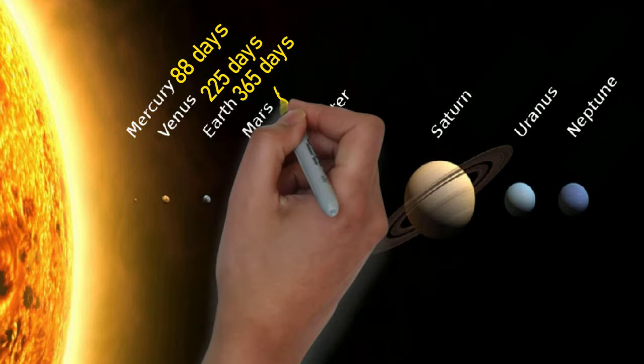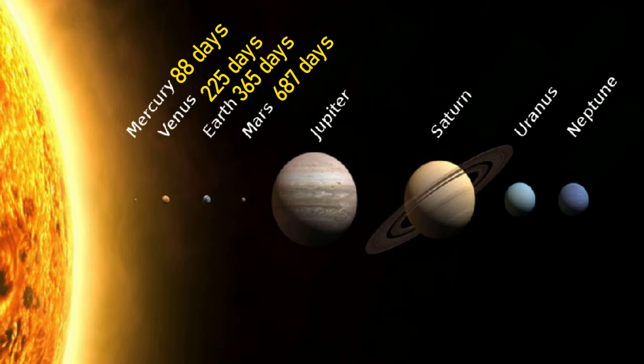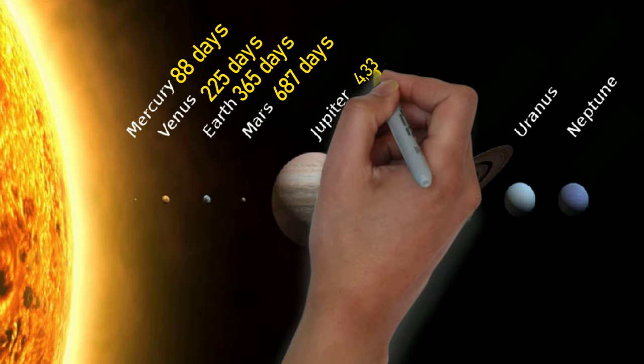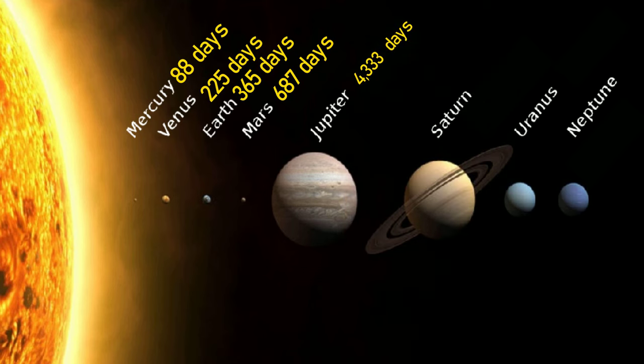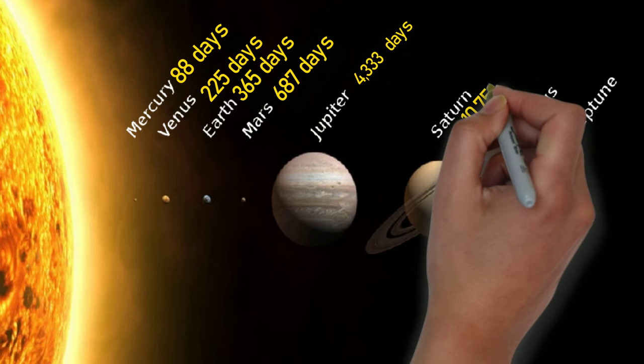Mars 687 days, Jupiter 4,333 days, Saturn 10,759 days.